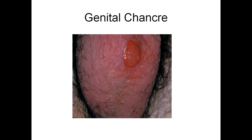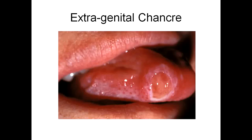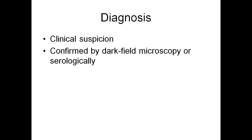This picture shows a chancre — it looks like a button in appearance, is a well-defined lesion, and on the margins it appears indurated on palpation. This is an extra-genital chancre on the lips. An extra-genital chancre on the tongue can be confused with an aphthous ulcer as well.